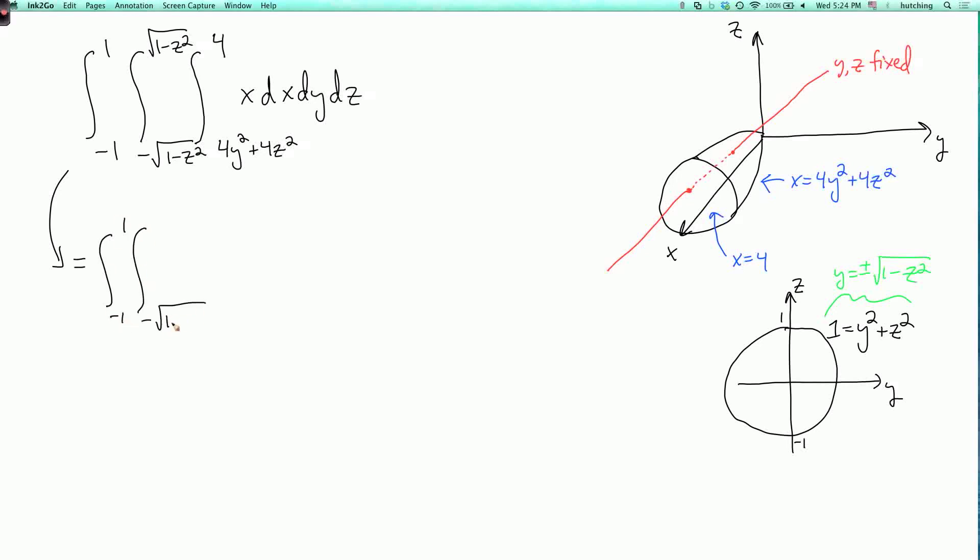Anyway, we can do the inner integral over x. So, I have to integrate x dx so I get x squared over 2 evaluated at x equals 4 and x equals 4y squared plus 4z squared, and then dy dz.